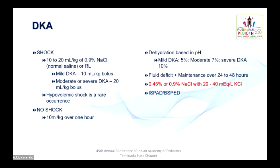In DKA, dehydration should be assessed based on pH rather than clinical assessment. Mild DKA is pH 7.2–7.37; moderate is less than 7.2; severe is less than 7.1 — corresponding to 5%, 7%, and 10% dehydration. The fluid of choice is 0.45% or 0.9% normal saline with 40 mEq/L of KCl. Hypovolemic shock is rare in DKA; if present, treat with 10–20 ml/kg of normal saline. If no shock but fluid is felt beneficial, give 10 ml/kg over one hour, then start insulin. Boluses given for non-shock patients must be subtracted from the fluid deficit plus maintenance over 24–48 hours; shock boluses need not be subtracted.